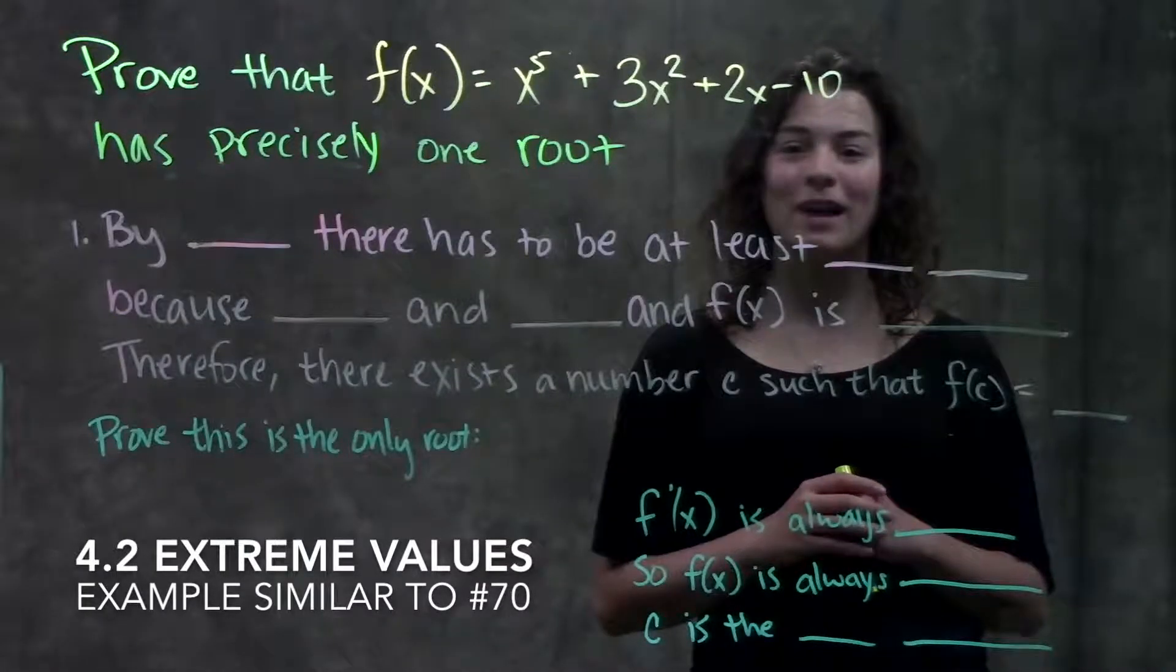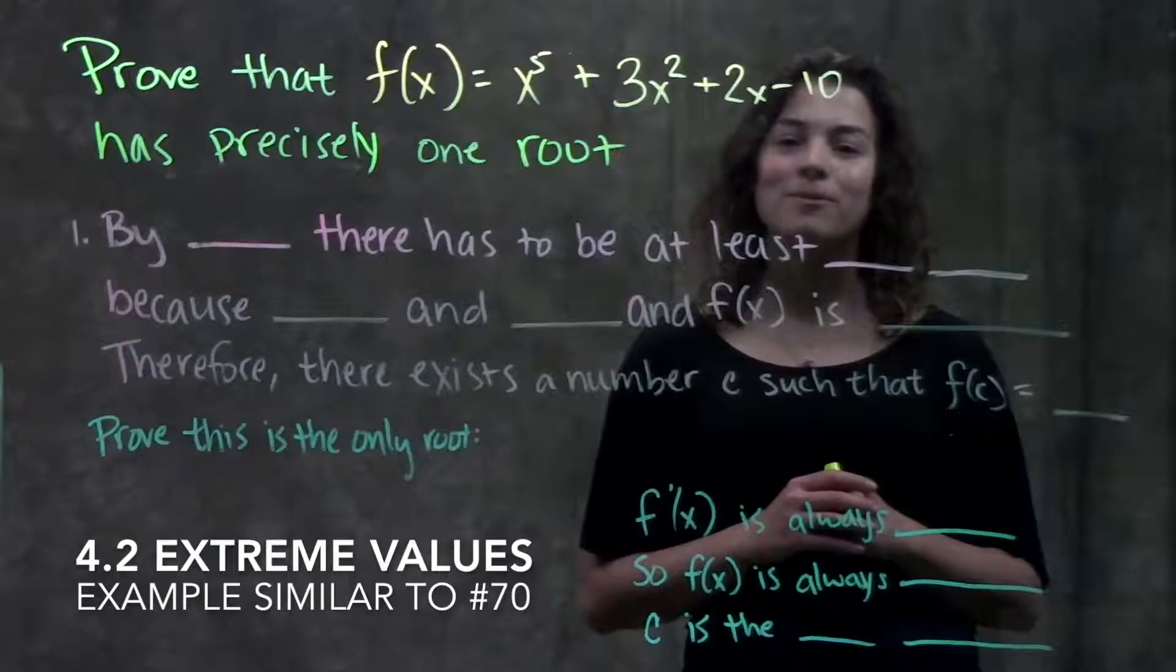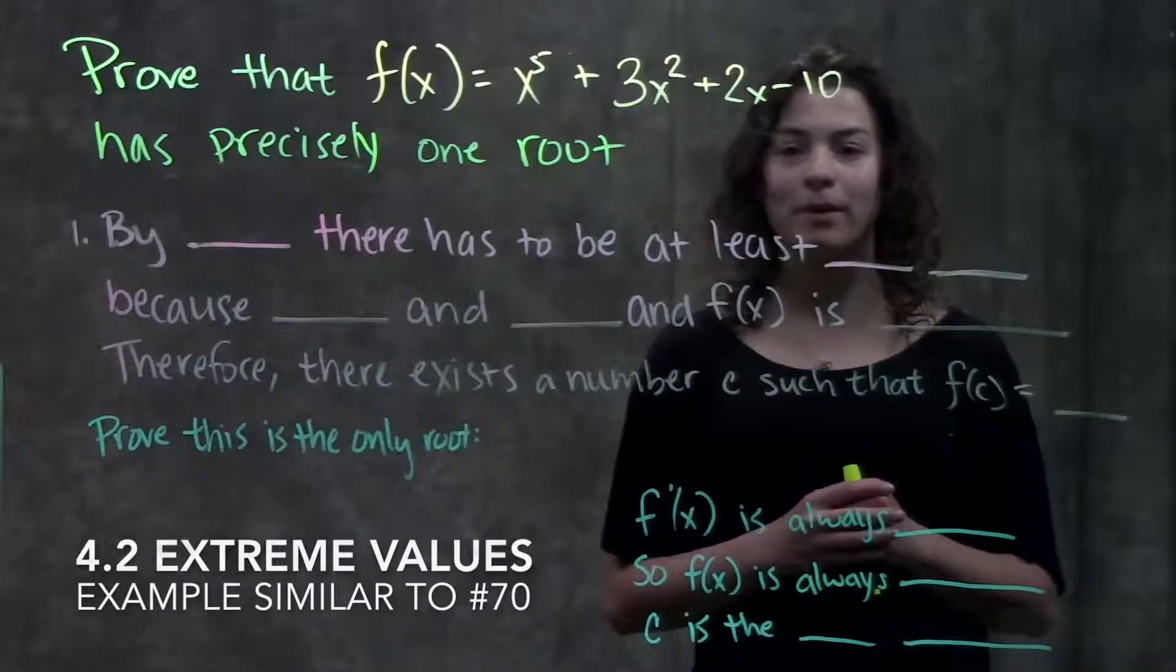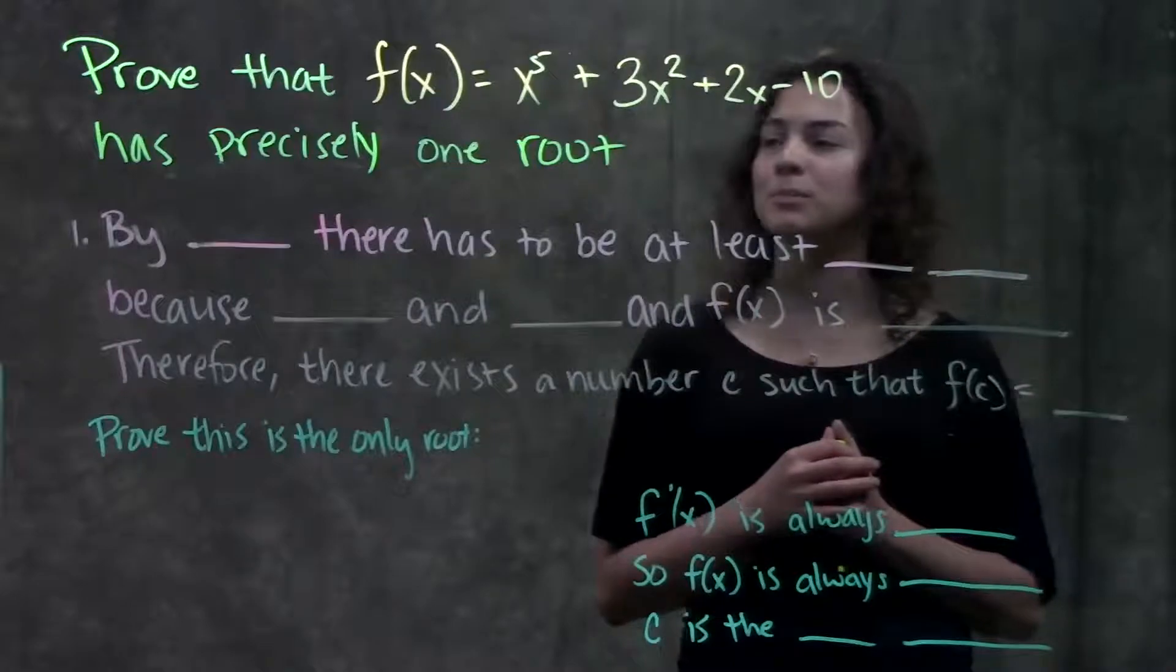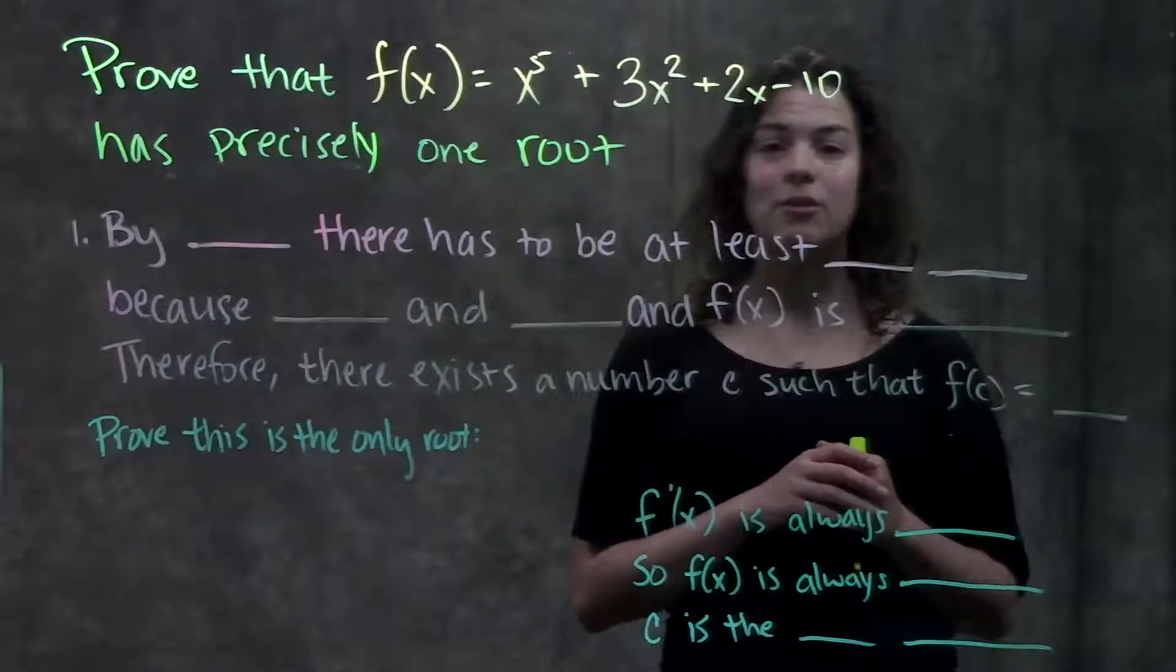This is section 4.2 extreme values. In this video we're going to go through an example problem that's really similar to number 70 in your book. This question asks us to prove that this function has precisely one root.